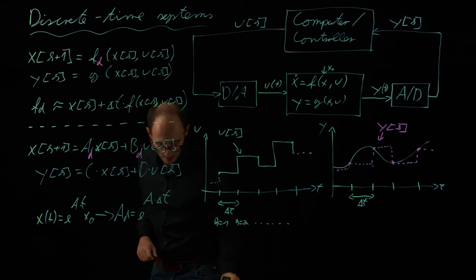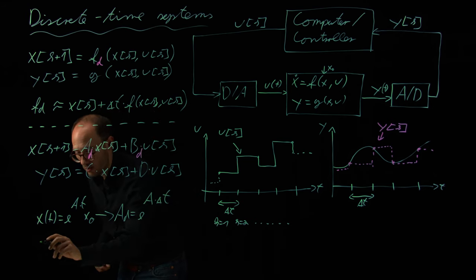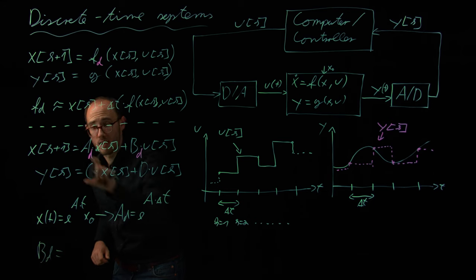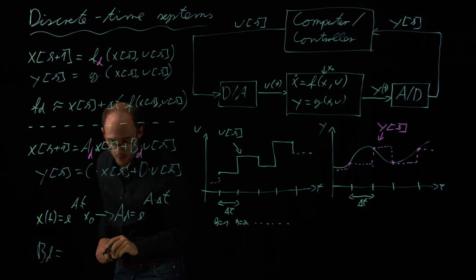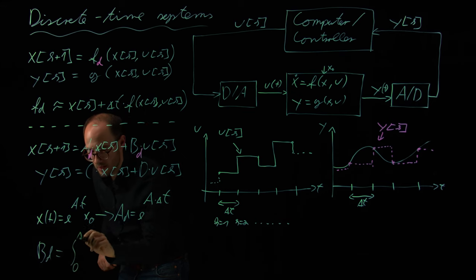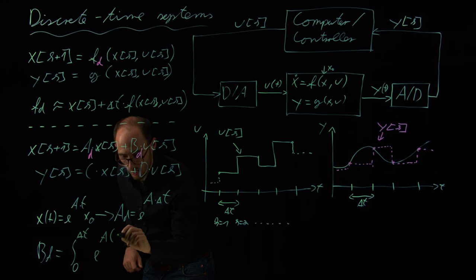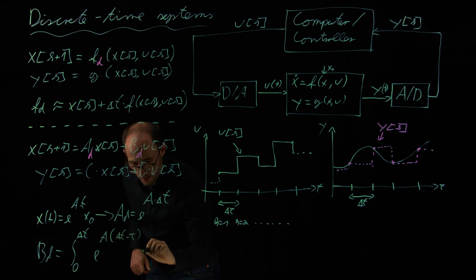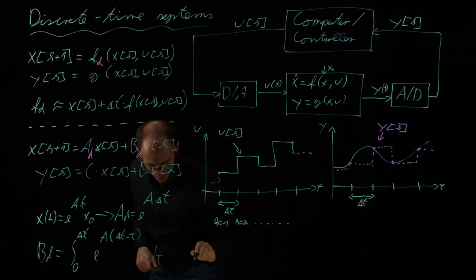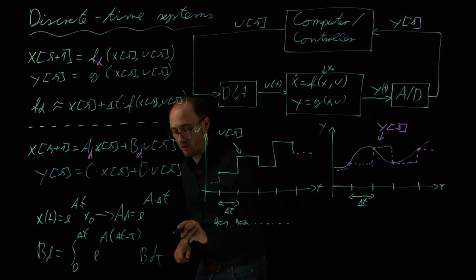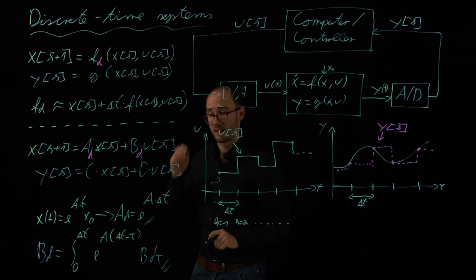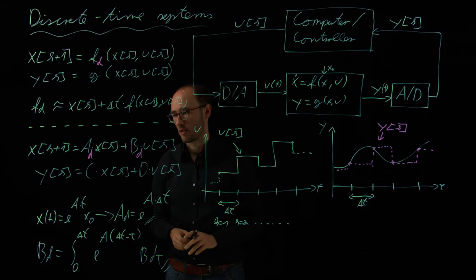The same can be done also for B_d when we compare this equation to our continuous time solution. And B_d becomes the integral from zero to delta t of e^(A·(delta t - tau)) times B d tau. So in this case, we can actually calculate A_d and B_d in an exact way and find direct solutions between A_d, B_d and A and B from the continuous time domain.